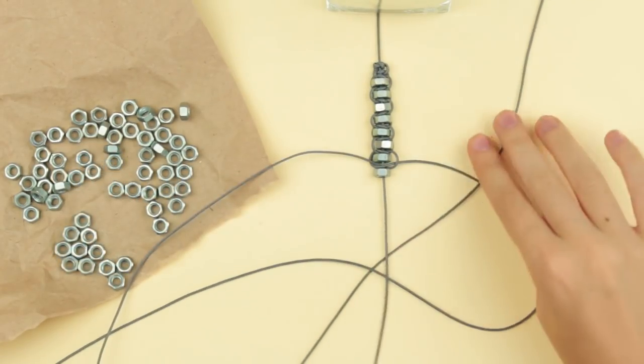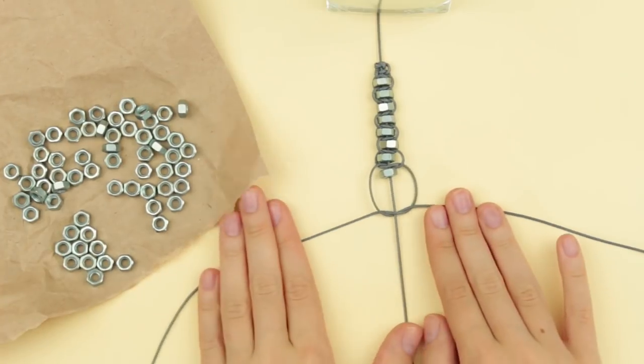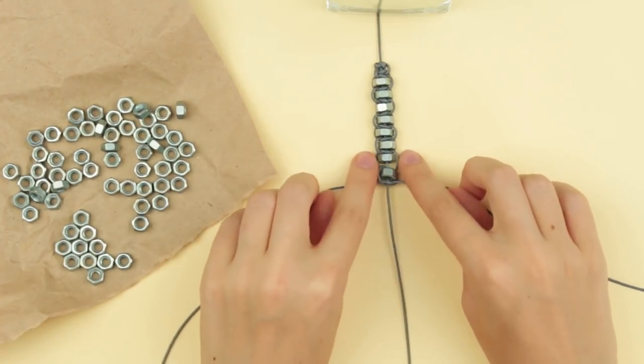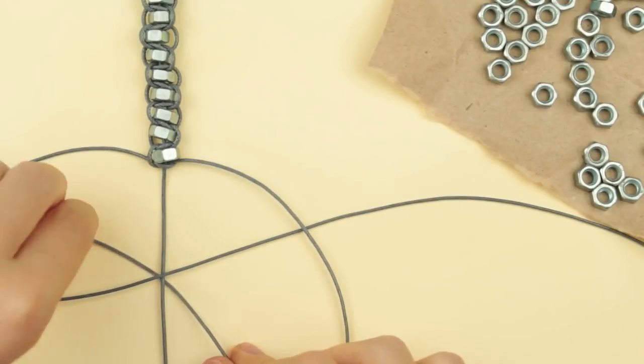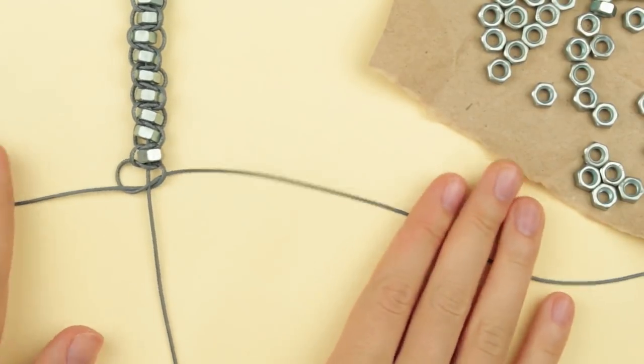It's better to take a long cord as it does shorten quickly while weaving. You can choose any thickness and any color. Tie several knots without nuts. The number of knots depends on your wish. Keep in mind the wrist size.